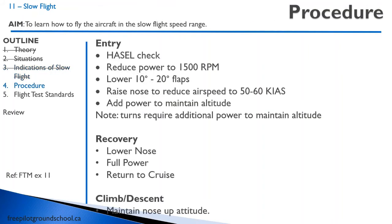Let's talk about the procedure for slow flight. When practicing slow flight, remember from our lesson on steep turns — we're going to do a HAZEL check: height, area, security, engine, and lookout. We're going to reduce power to 1500 RPM. I generally recommend lowering 10 to 20 degrees of flaps, which replicates what slow flight would be like during a soft field takeoff.